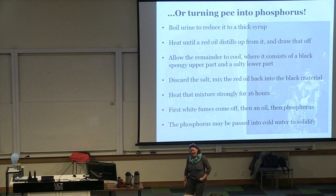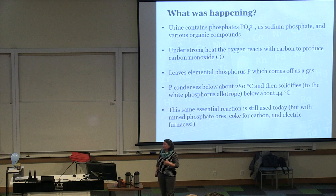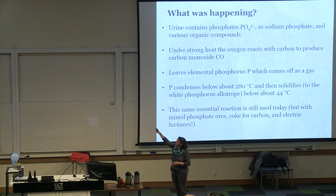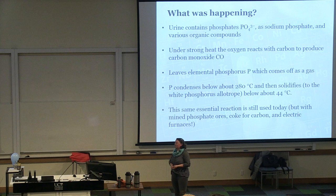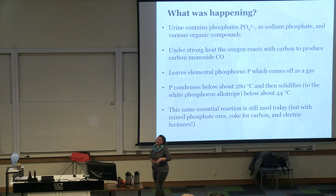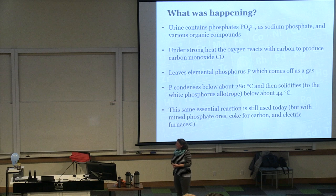What was actually happening? When you urinate, you've got phosphates in there — they contain phosphorus and oxygen — as a sodium salt, sodium phosphate. You also have organic compounds containing carbon. When you heat things up, the oxygen from the phosphate (PO₄) reacts with the carbon to produce carbon monoxide. So as well as boiling urine, we now have carbon monoxide — which can kill you — in that basement. That leaves elemental phosphorus, which comes off as a gas, condenses around 280°C to a liquid, and solidifies around 44°C. Interestingly, it's approximately the same reaction used today to produce phosphorus, except they use mined phosphate ores and coke for carbon, with electric furnaces rather than an open fire.